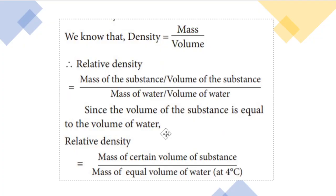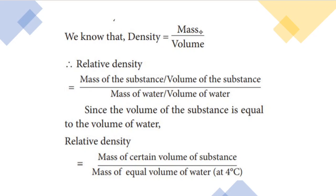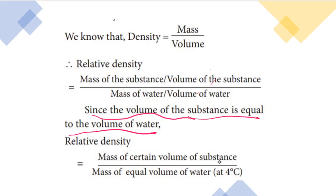The mathematical expression for relative density is: density of the substance divided by density of water at 4 degrees centigrade. This equals mass of a certain volume of substance divided by mass of an equal volume of water. Since both numerator and denominator have the same units (kilograms), they cancel out. Therefore, relative density has no units.